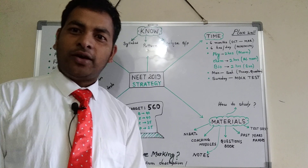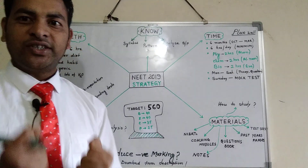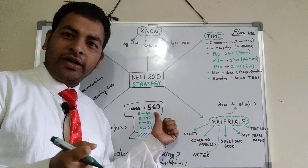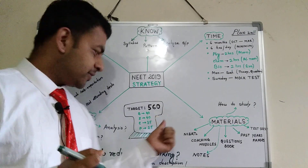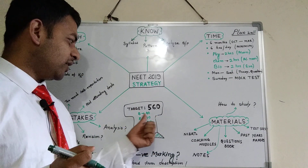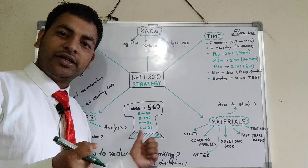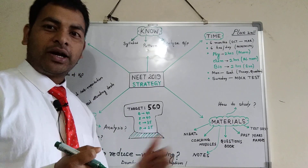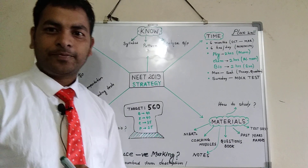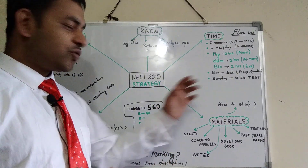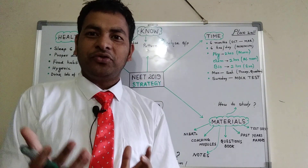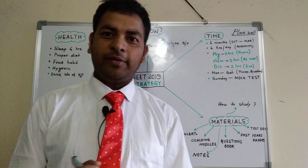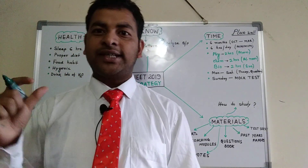Now coming to your target: what should my target score be in NEET 2019? Try to get 560 marks overall. For botany, you should get 40 correct answers; for zoology, 40 correct answers; for chemistry, 35 correct answers; and for physics, 25 correct answers.